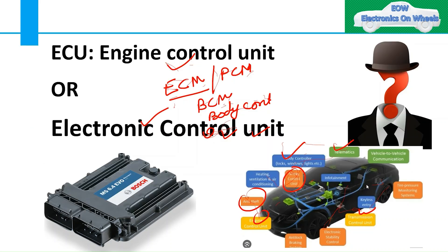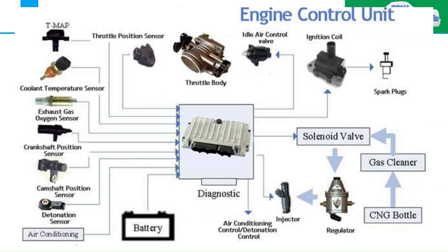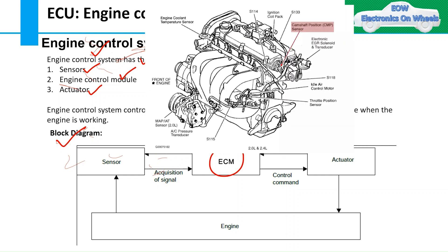Today in this video we will discuss about the engine control unit, or engine control module (ECM). The engine control system has three main parts: first is the sensors, second is the engine control module (ECM or ECU), and third is the actuator. The engine control system basically controls the air suction amount, engine injection amount, and ignition angle while the engine is working.